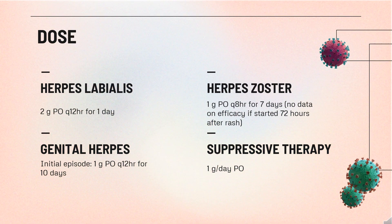Dose. Herpes labialis: 2g PO every 12 hours for 1 day. Herpes zoster: 1g PO every 8 hours for 7 days — no data on efficacy if started more than 72 hours after rash onset. Genital herpes initial episode: 1g PO every 12 hours for 10 days. Recurrent episodes: 500 mg PO every 12 hours for 3 days — no data on efficacy if started more than 24 hours after lesion onset. Suppressive therapy for immunocompetent patients: 1g per day PO. Transmission reduction for the source partner: 500 mg per day PO.